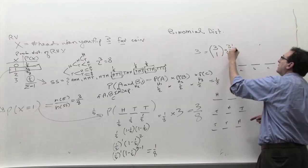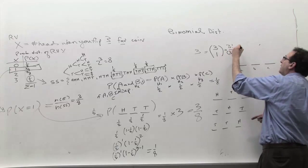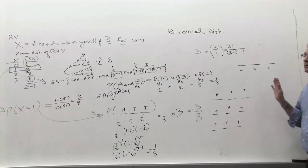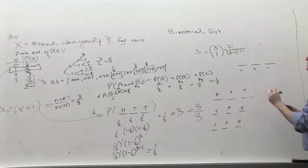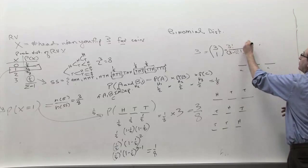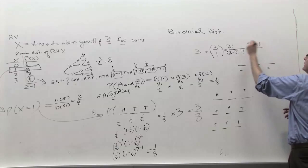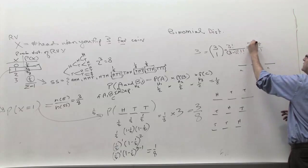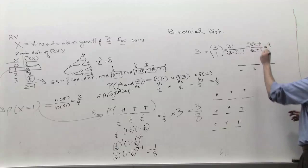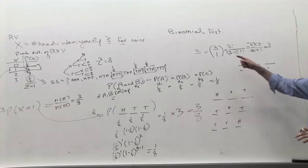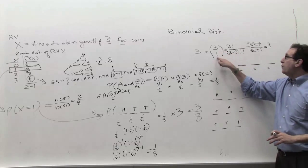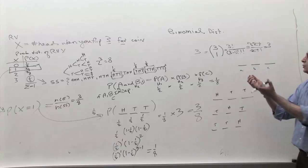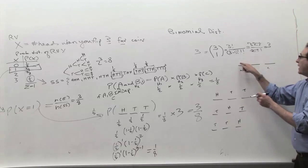Three factorial divided by two factorial times one factorial. This is three times two times one, divided by two times one, times one. These cancel, and this is equal to three. So we're saying that if you're flipping three coins and one of them has to be a head, how many ways can you do it? Three ways, because we're choosing one of those slots to be a head.